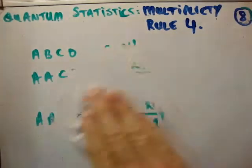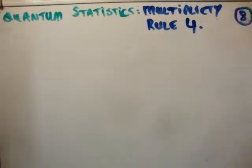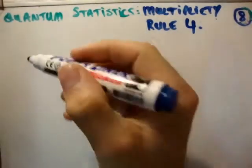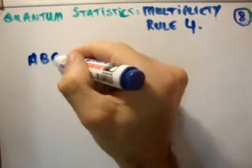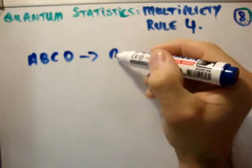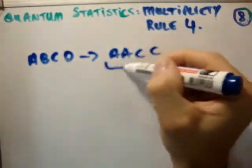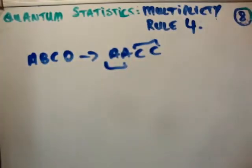Alright, so now, what happens if we have, this is, like I said, it's the same thing. I'm just going to do it in a different way. We go from a, b, c, d, and I want to end up with double A, double C. So you have two species, each of which has two identical particles.